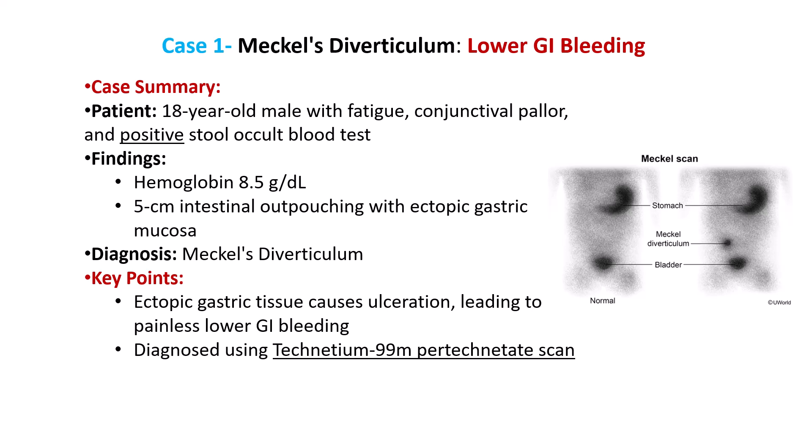For the USMLE Step 1, remember that Meckel's diverticulum often presents with painless rectal bleeding in young patients and is diagnosed using a technetium-99m pertechnetate scan, which detects ectopic gastric mucosa. The NBME often tests on the rule of twos: Meckel's diverticulum is typically located within 2 feet of the ileocecal valve, is about 2 inches long, and commonly presents before the age of 2.